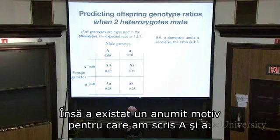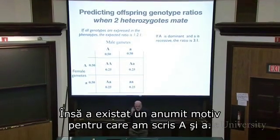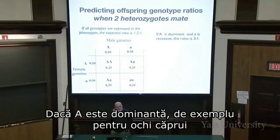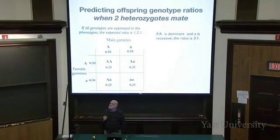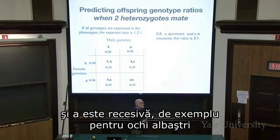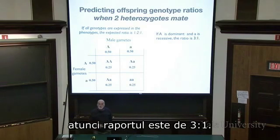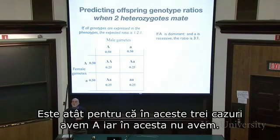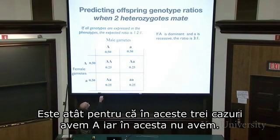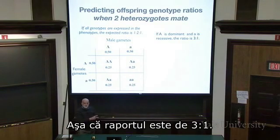There was a reason we wrote big A and little a. If big A is dominant — say it's brown eyes — and little a is recessive — say it's blue eyes — then the phenotypic ratio is 3 to 1. That's because in three of the four cases we have a big A present, and in only one case we don't. So the ratio is 3 to 1.